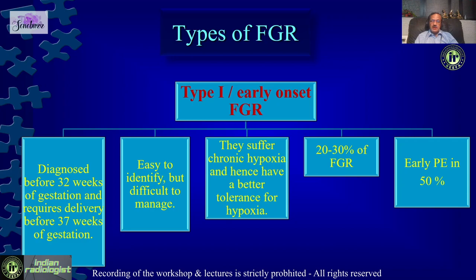Early onset FGRs are diagnosed before 32 weeks of gestation and generally require delivery by 37 weeks. They are easy to identify because the biometry is abnormal. But they are difficult to manage because many are premature. They suffer from chronic hypoxia and therefore have a better tolerance for hypoxia. They constitute about 20 to 30% of all growth restriction cases, and a good number have early onset preeclampsia. Therefore, they are picked up easily on uterine artery Doppler when we see an abnormal uterine artery Doppler.